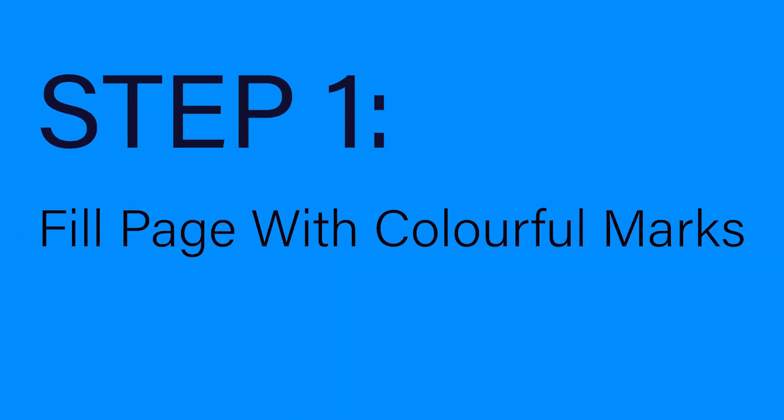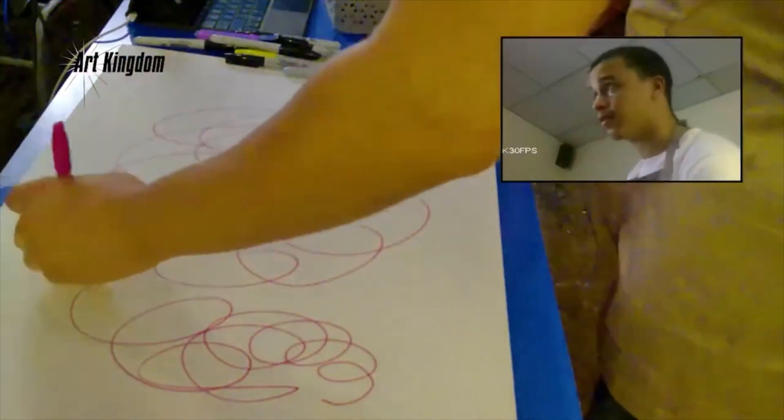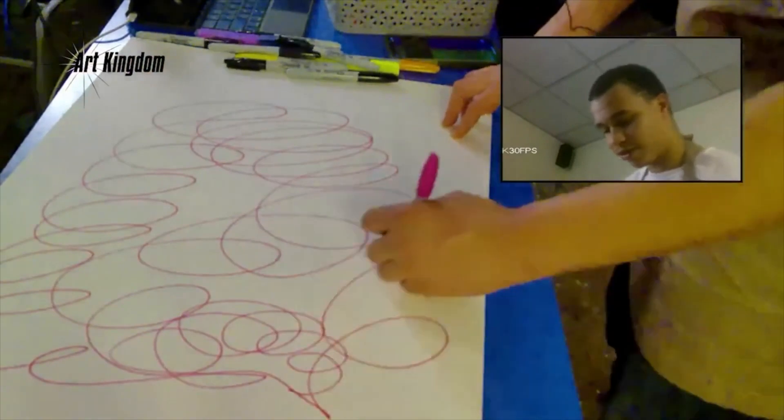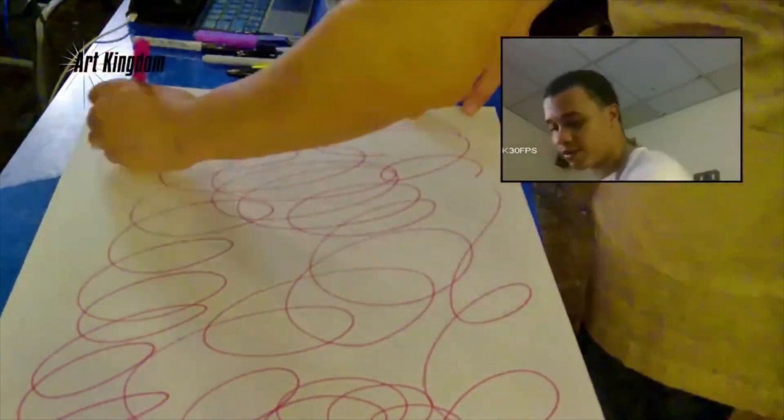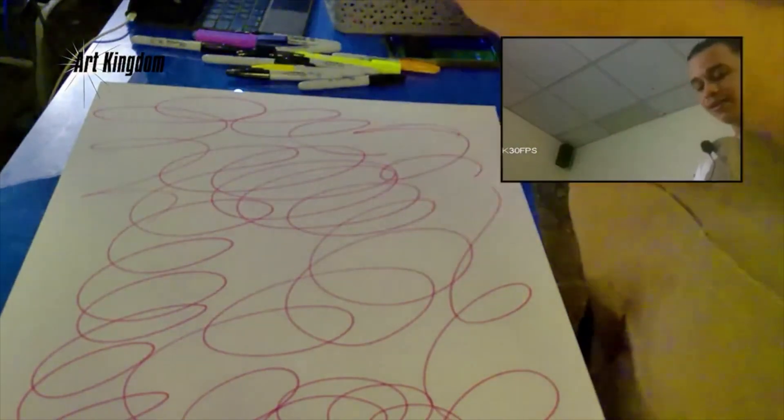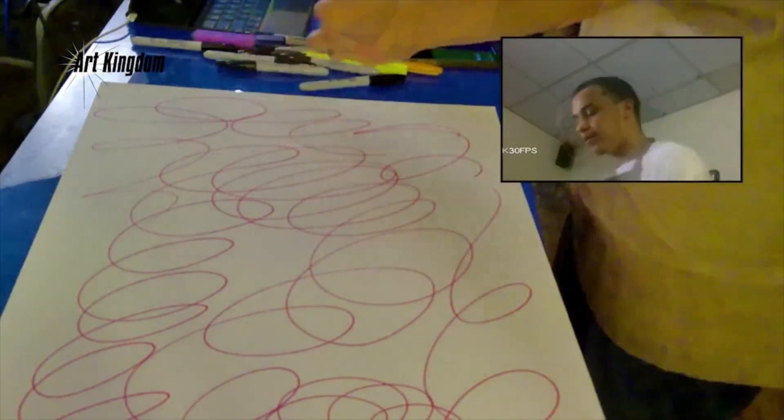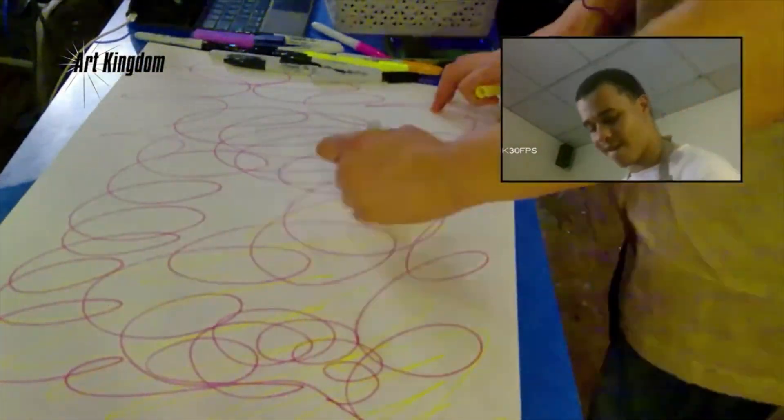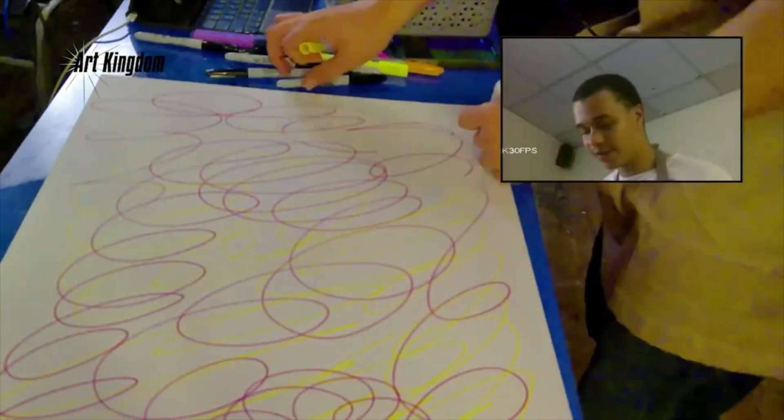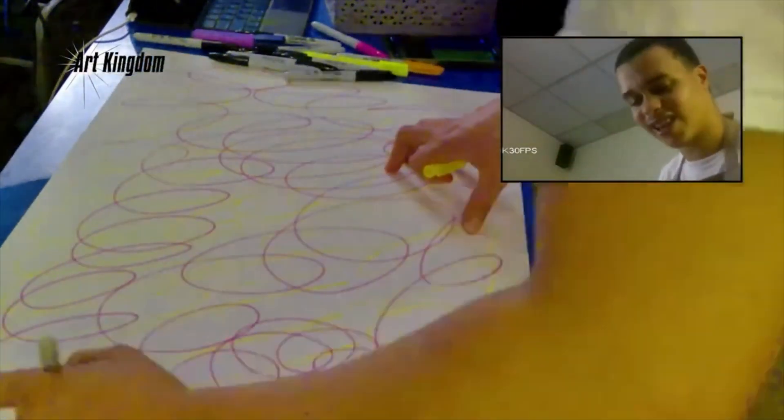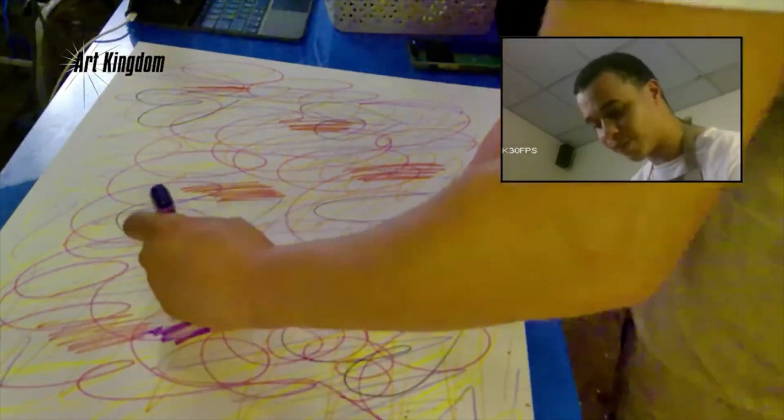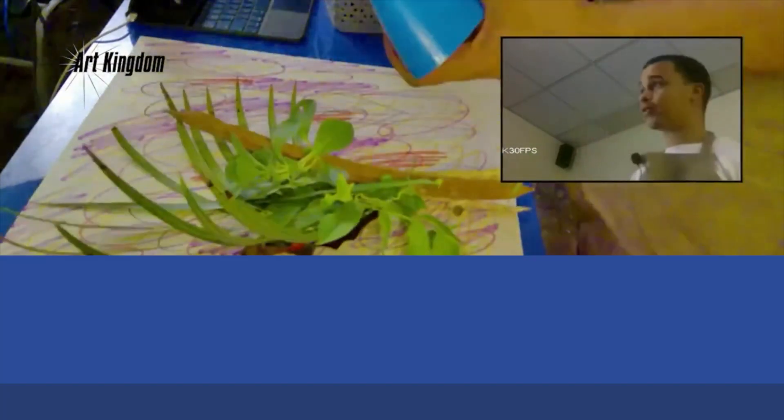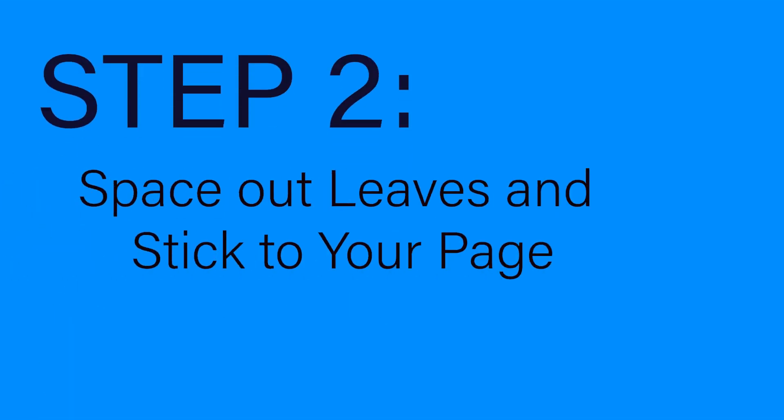By messing up my page all over, because if you don't make a mess there's nothing to clean up. I'm just going to fill in some of these spaces with purple. I've got my leaves.